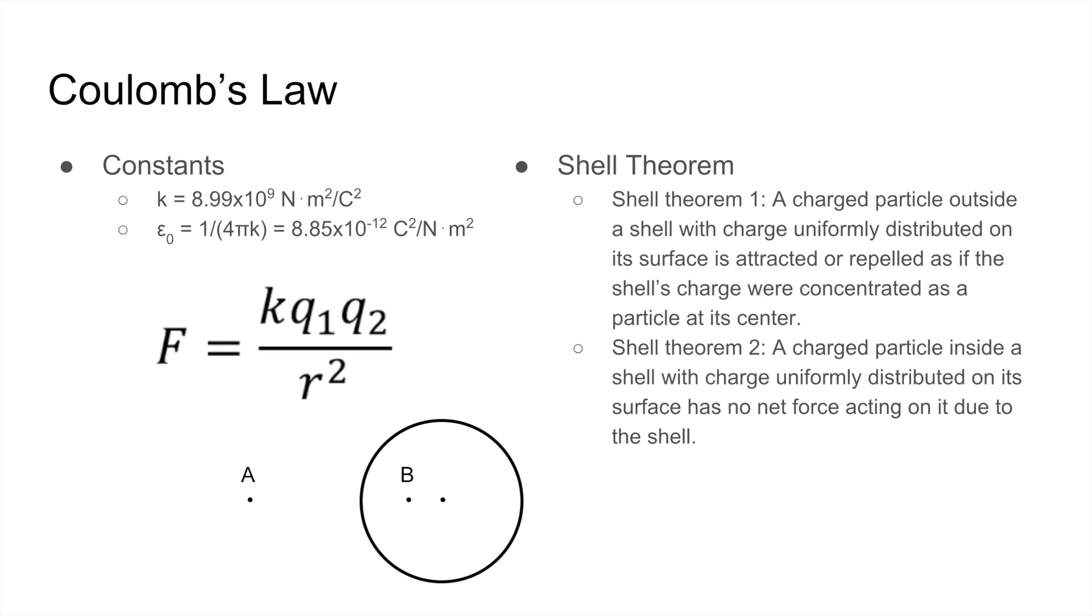So Coulomb's Law is given by force equals k times the first charge q1 times the second charge q2 over the distance r squared. This force is also a vector, and it points in the direction of the radius of the two charges. So if q1 and q2 were of the same sign, that means the force would point towards the radius, which means that it would be a repelling force.